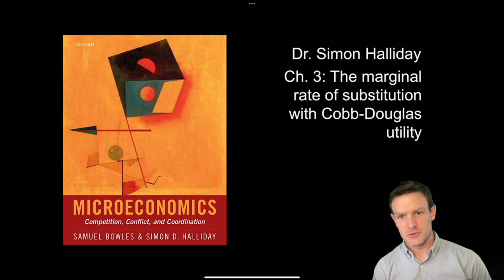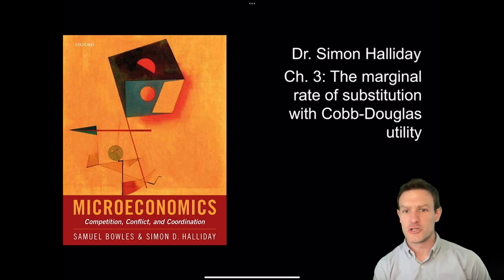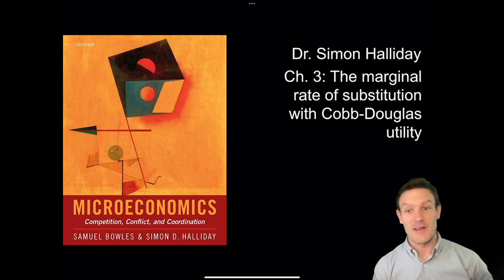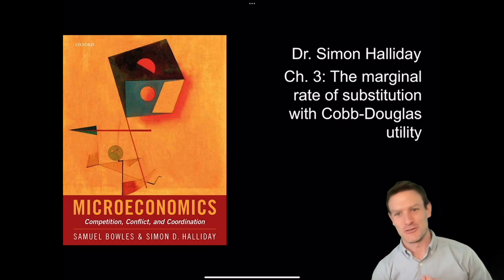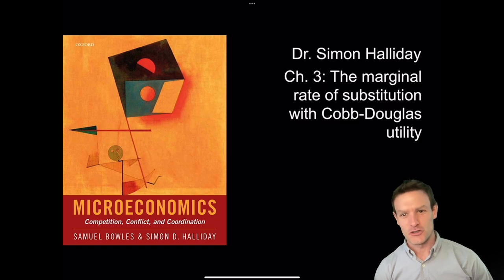We've spoken about the marginal rate of substitution being defined as the negative of the slope of the indifference curves, or the ratio of the marginal utilities. So let's think about what this looks like with an actual functional form. The functional form we're going to talk about is the Cobb-Douglas utility function.